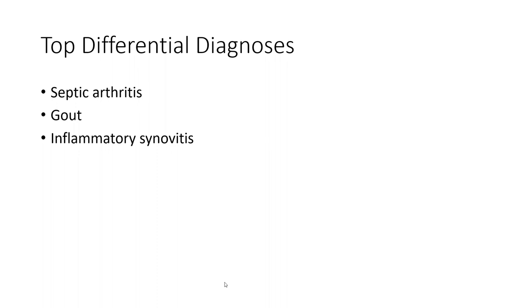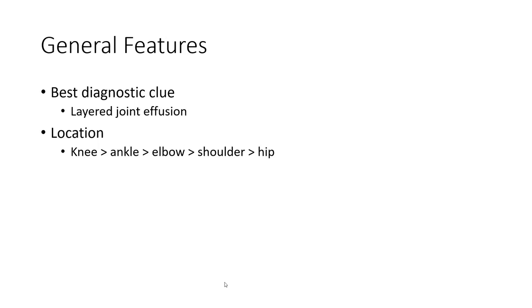Top differentials for hemarthrosis include septic arthritis and hemophilia A and B, which are X-linked recessive conditions.